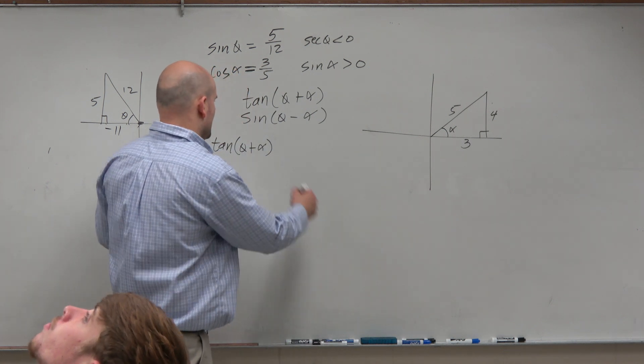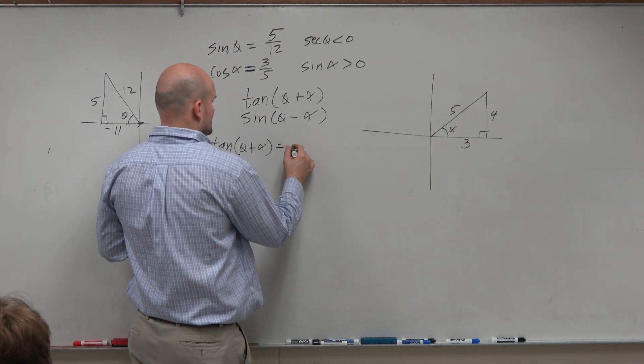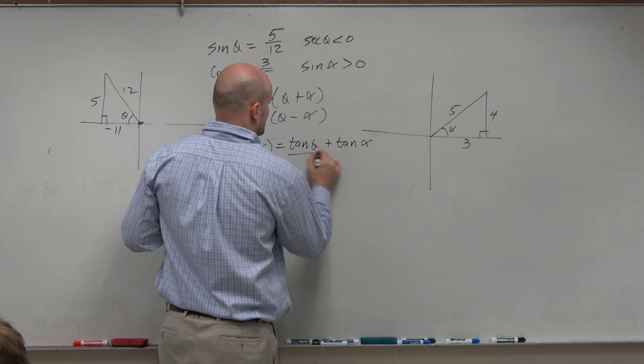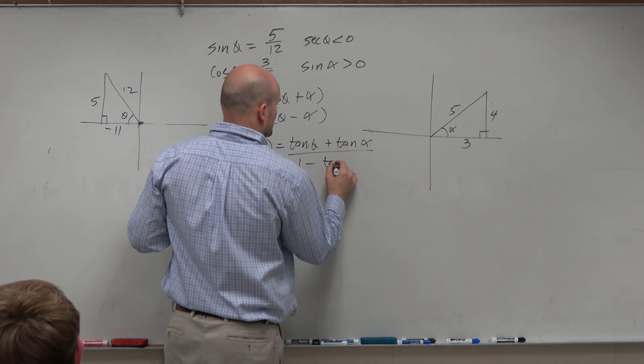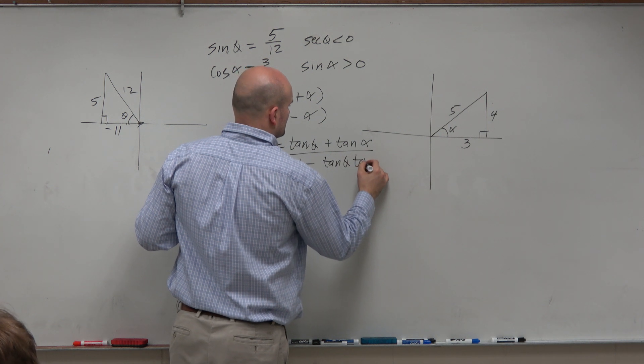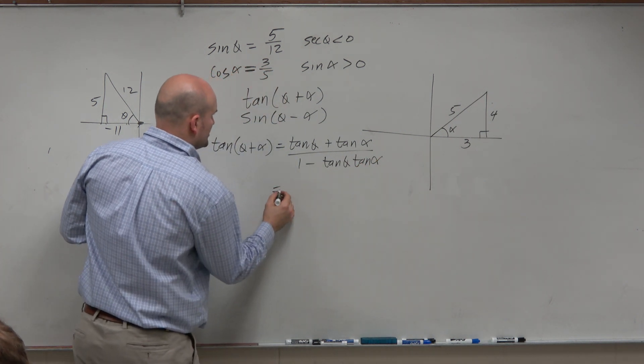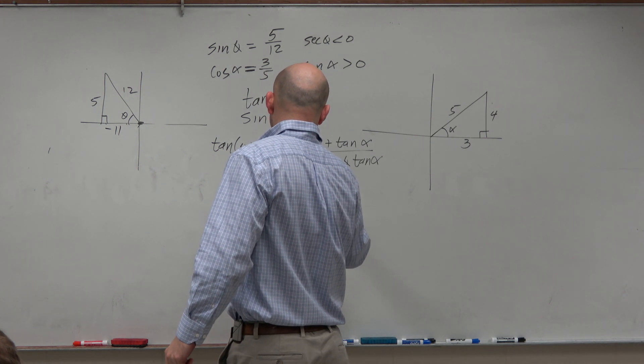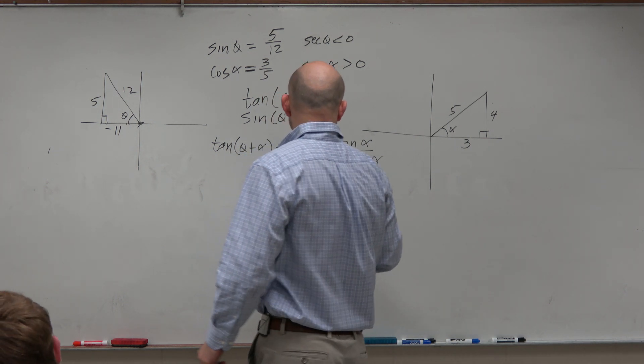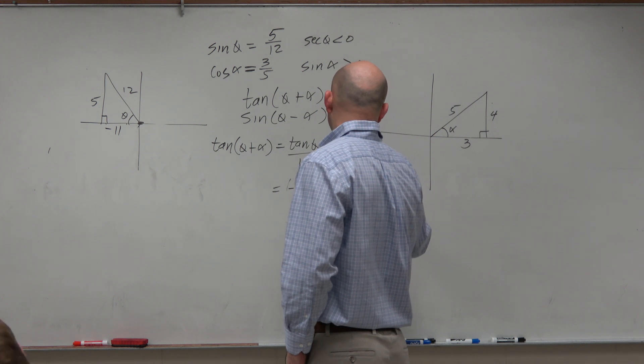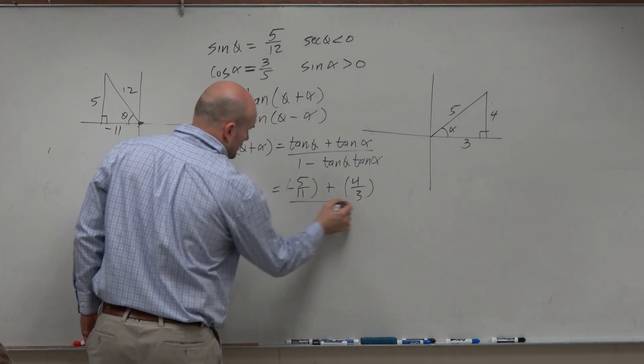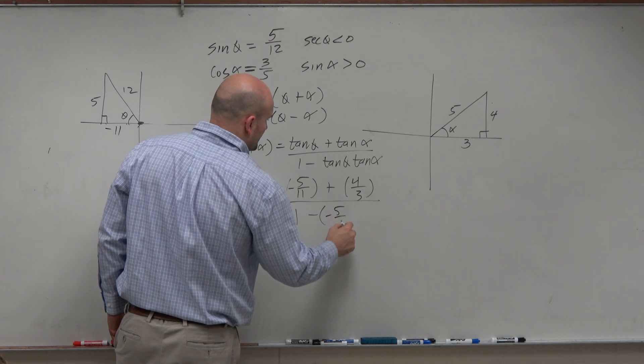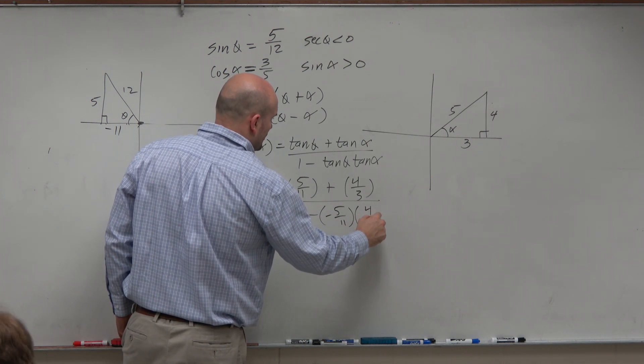So this isn't that bad. So this is the tangent of theta plus the tangent of alpha, all over 1 minus tangent of theta, tangent of alpha, which is tangent of theta, negative 5 over 11, plus tangent of alpha, which is 4 over 3, divided by 1 minus negative 5 over 11, times a 4 over 3.